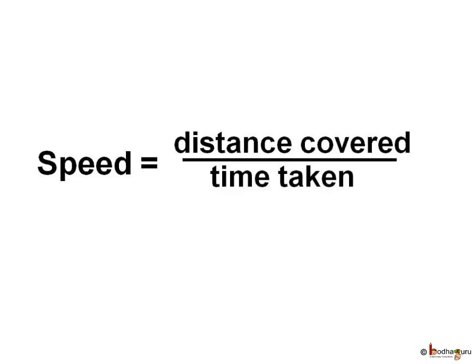This is called speed of the moving object. You can find the speed of any moving object by knowing the distance covered and the time taken to cover this distance. We can write: speed equals distance covered divided by time taken. The distance covered by an object in unit time is called the speed of the object.